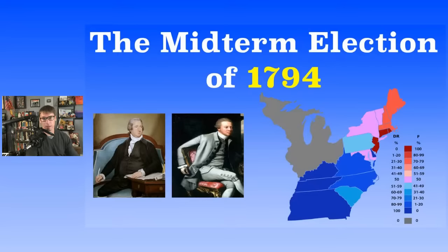In the House of Representatives, things were a little bit different. Remember, Muhlenberg had switched to the Democratic-Republican side. There were 105 seats in the House at that time; 53 were needed for a majority. After the election, Democratic-Republicans ended up with 59 seats — a majority — and the Federalists had 47, losing four seats.